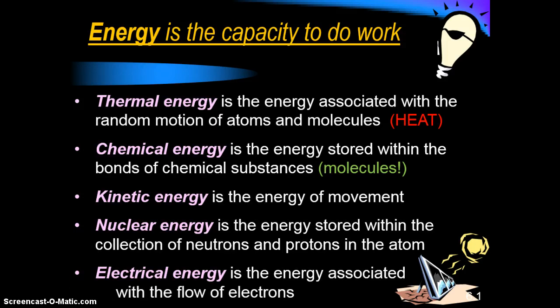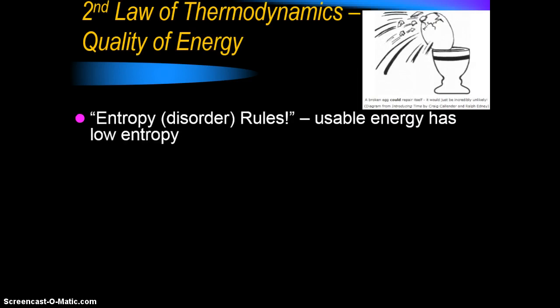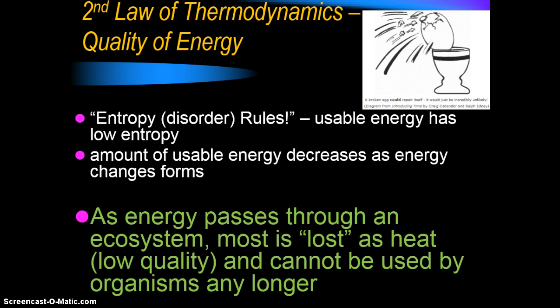We also have the second law of thermodynamics, which talks about the quality of energy. Basically, energy is going to become lower and lower quality as it gets moved around and used more and more times. The amount of usable energy decreases as energy changes forms. In this unit, that means as energy passes through an ecosystem, most of it is going to be lost as heat, which is low-quality energy that organisms can no longer use.